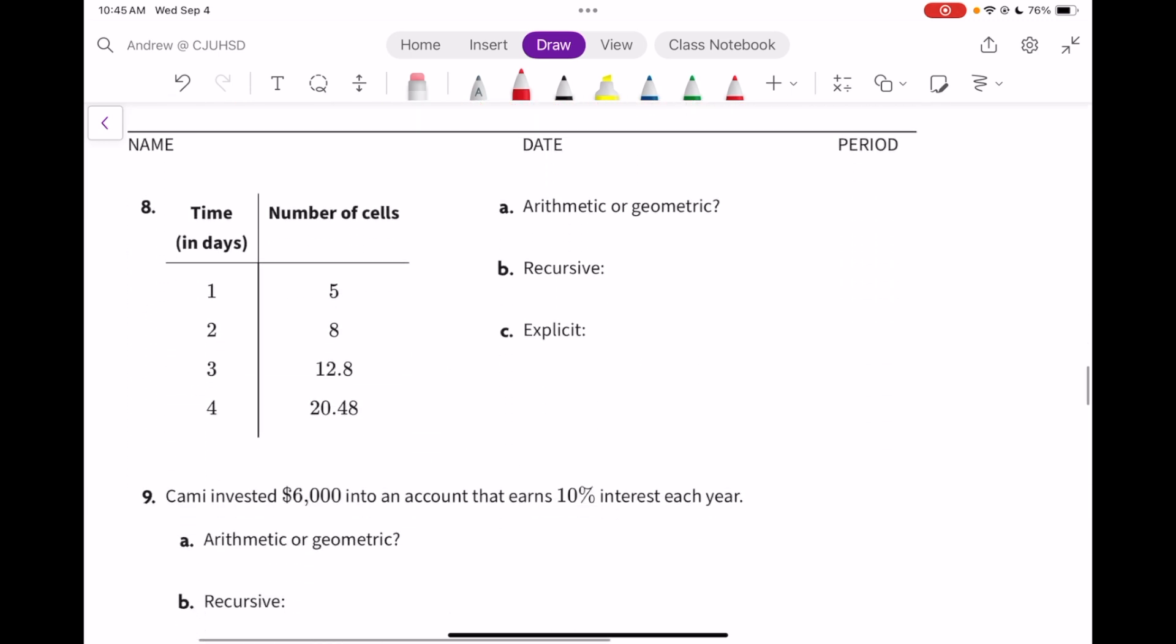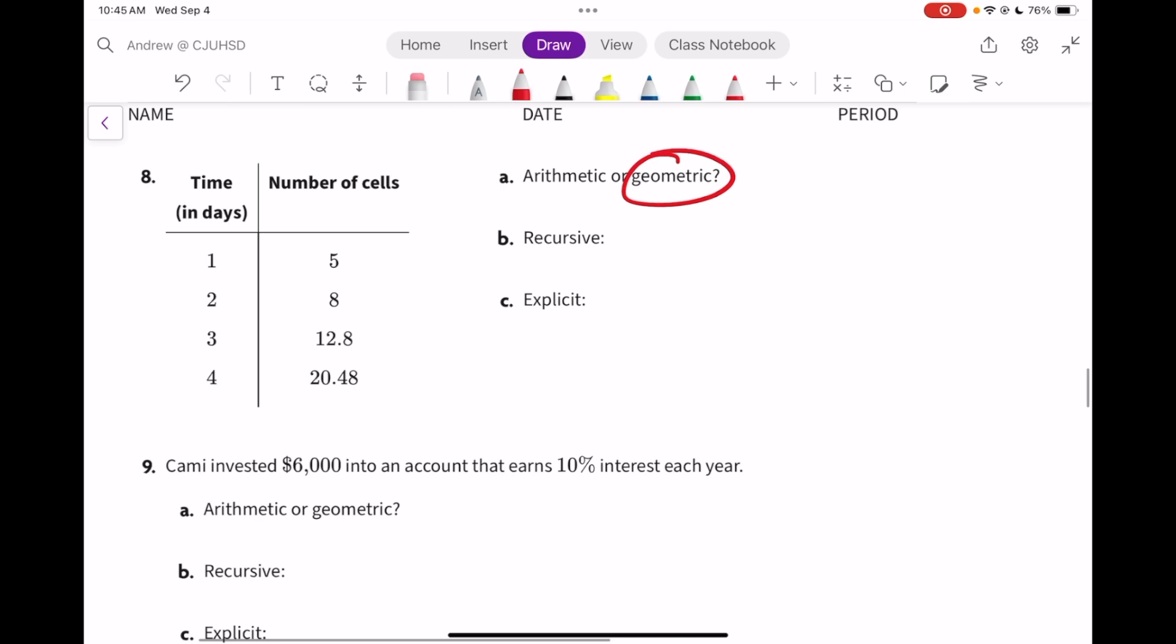Number 8 is actually geometric. Take 8 divided by 5, you're going to find the common ratio is 1.6. So our start is at 5. And let's write this one in function notation. f(n) equals 1.6 times the previous, but the previous is f(n minus 1). Explicitly, that's f(n) equals first number times the multiplier to the power of n minus 1.